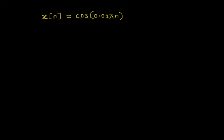Welcome to the video lecture on periodic and aperiodic signals. In this video we will consider an example wherein x[n] equals cos(0.01πn), and the task is to test if the given signal is periodic or not. If periodic, what is the fundamental period?